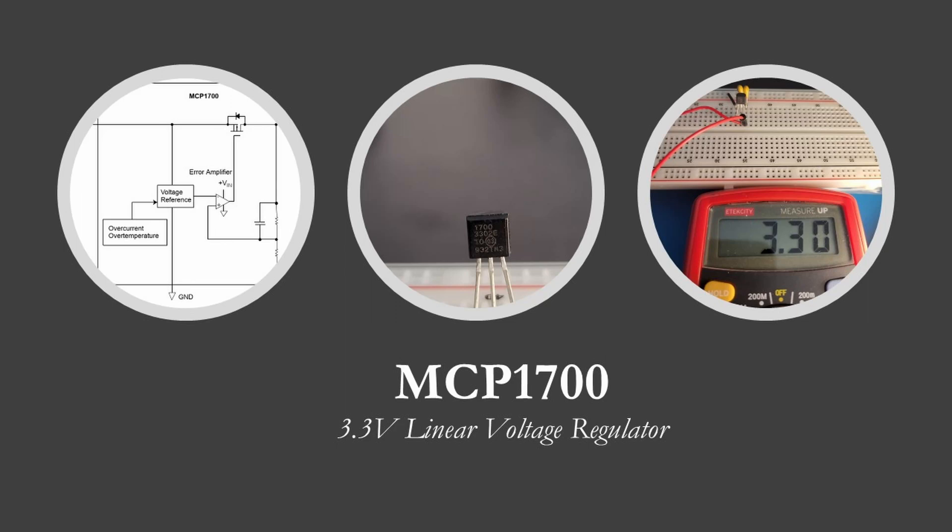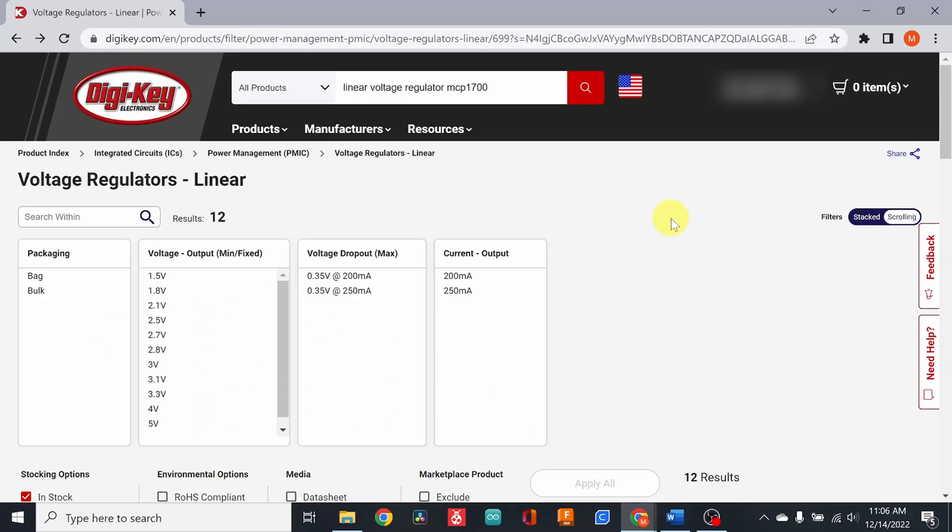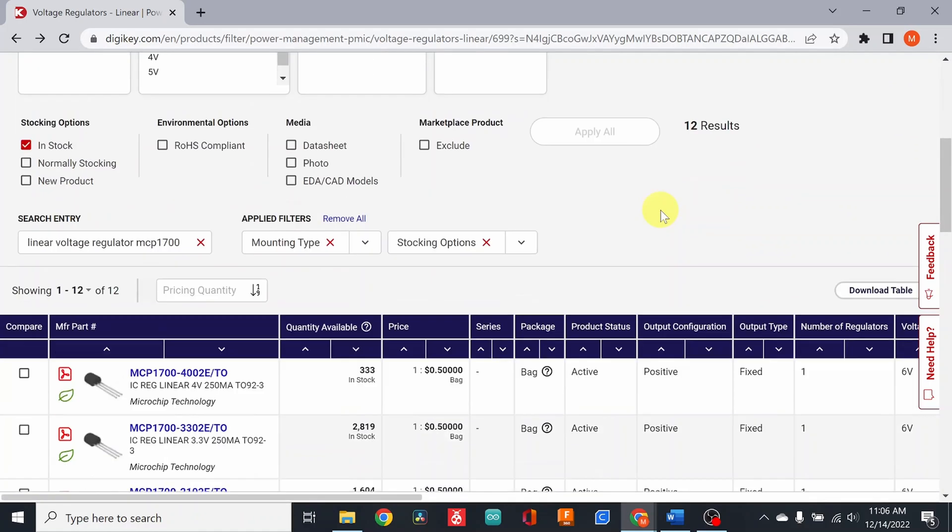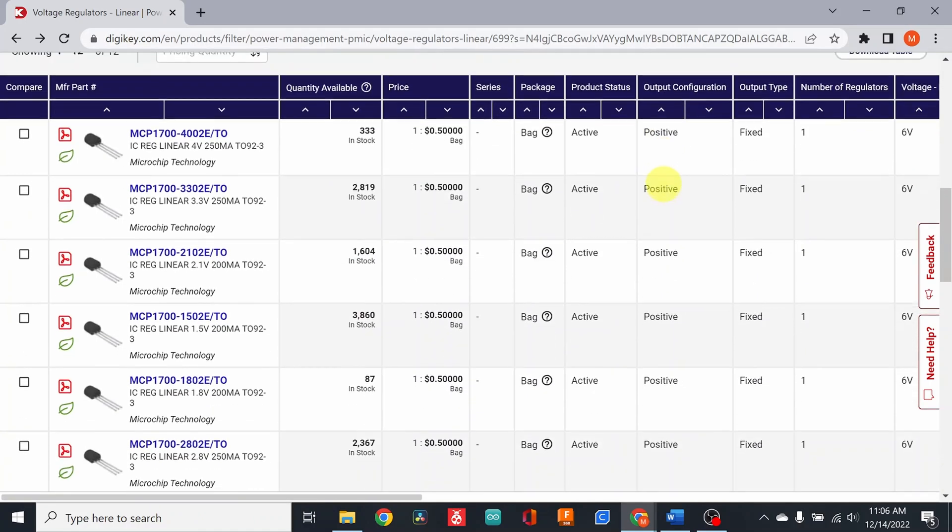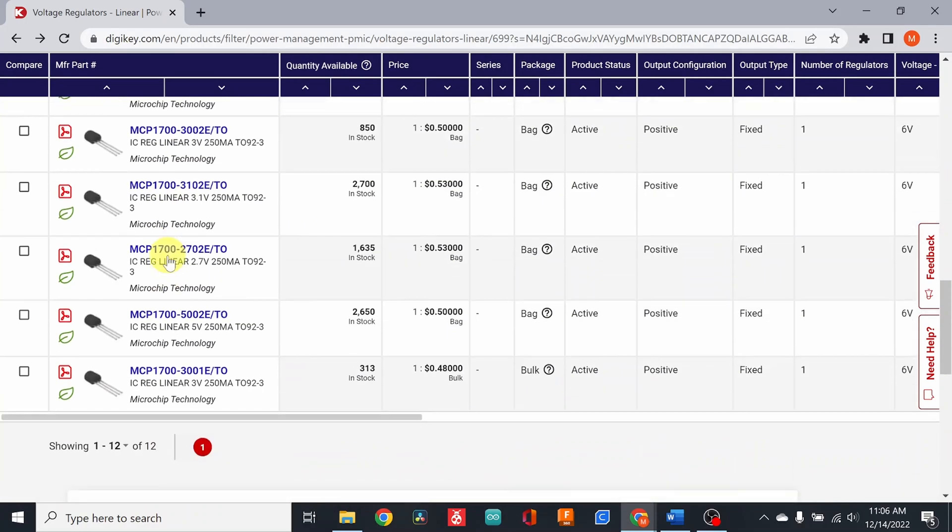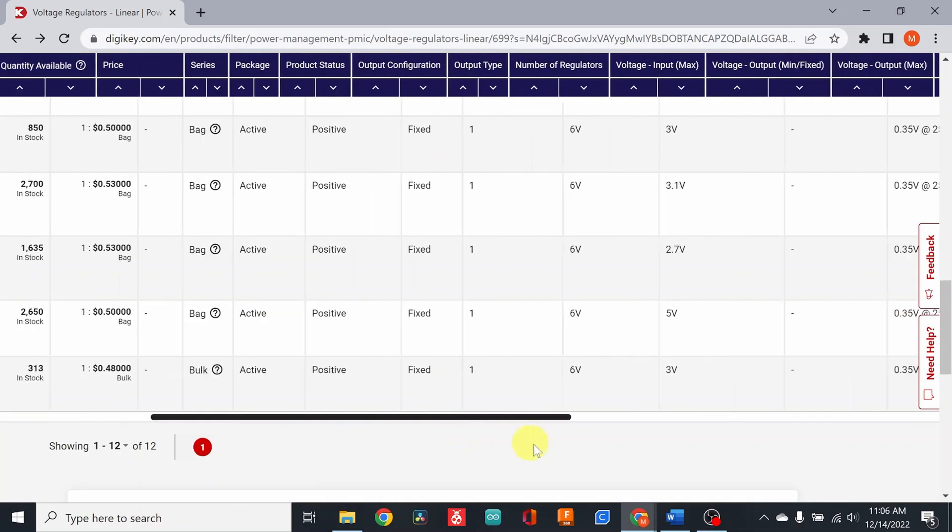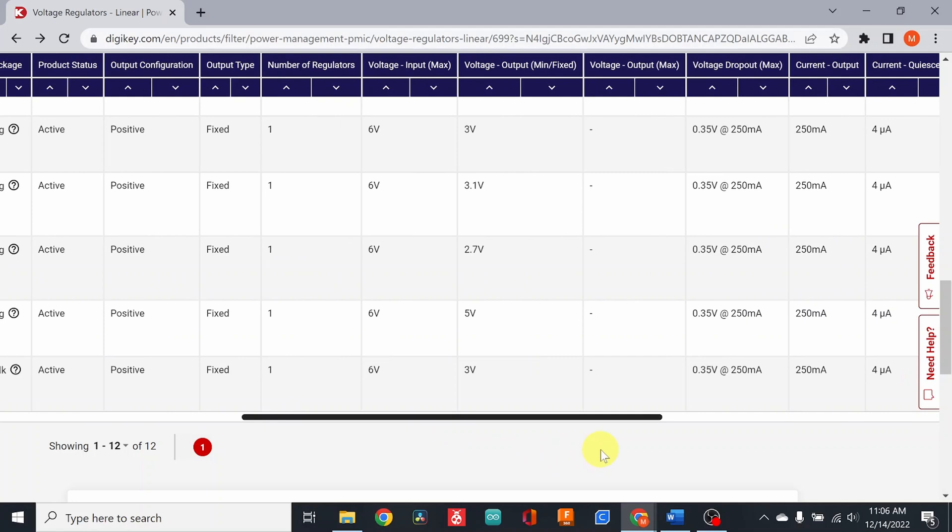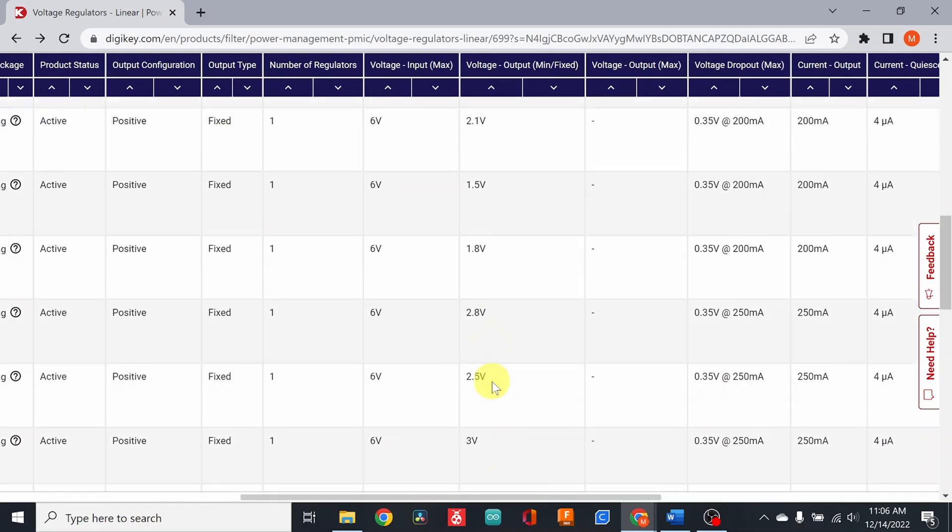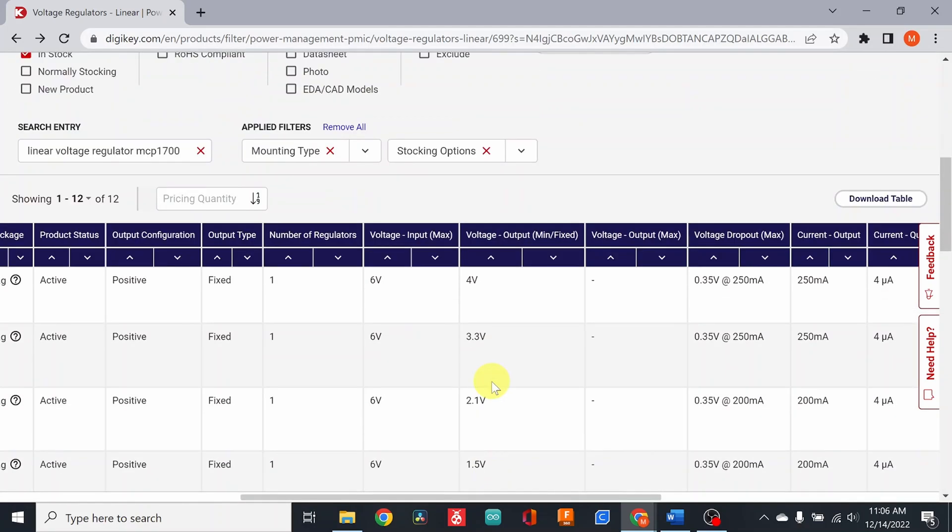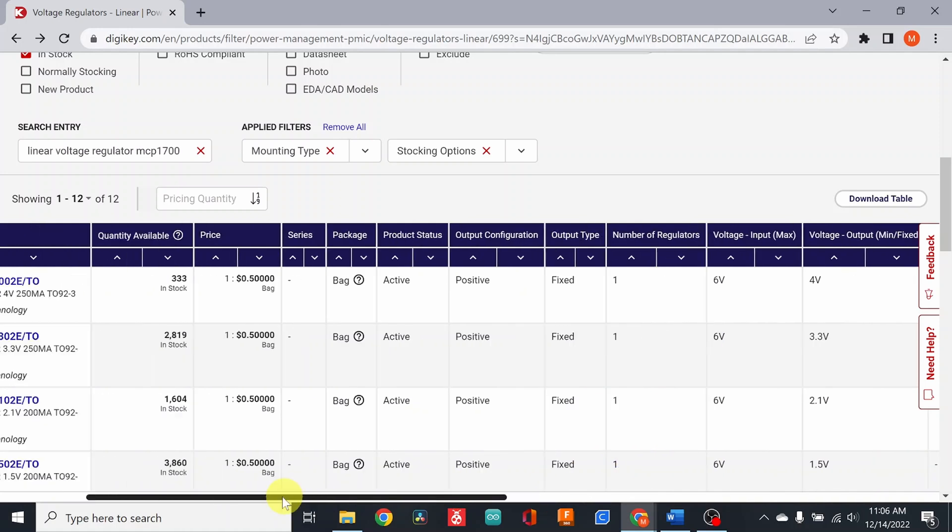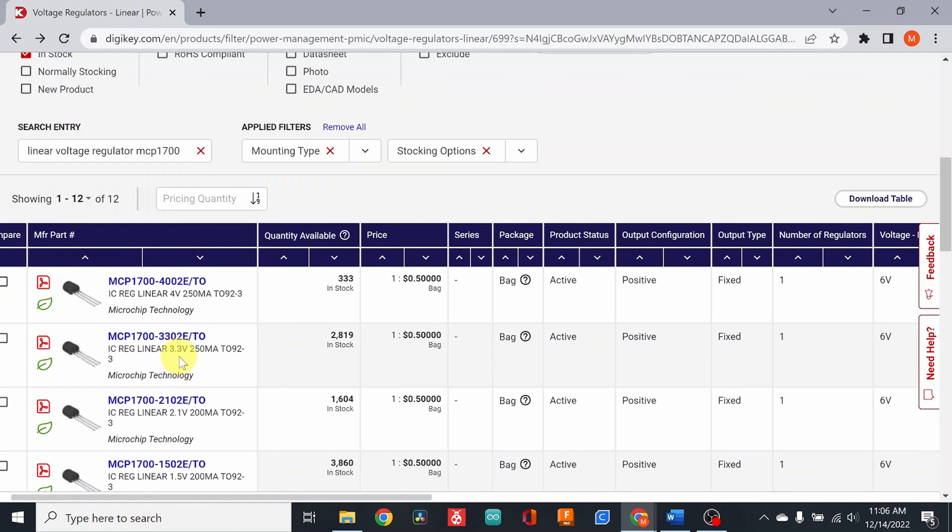Hello everyone. Today we will be taking a look at the 3.3V linear voltage regulator of the MCP700 series by microchip. There are many regulators in this series providing different levels of voltage regulation at the output. You can find regulators with output voltage ranging from 1.2V to 5V. The one with an output voltage of 3.3V has the manufacturing part number MCP7003302E.